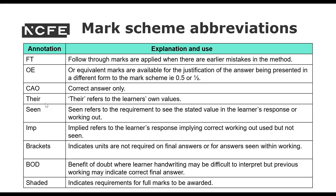IMP stands for implied — this refers to the learner's response implying correct working out was used but not seen. Brackets indicate that units are not required on final answers or for answers seen within working. BOD stands for benefit of doubt, where the learner's handwriting may be difficult to interpret but previous working may indicate the correct final answer. Anything shaded in the mark scheme indicates the requirements for full marks to be awarded.